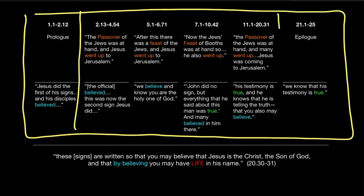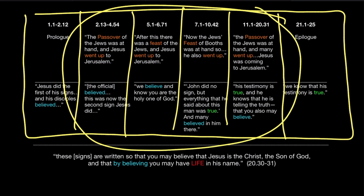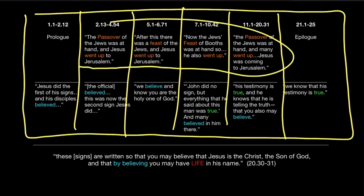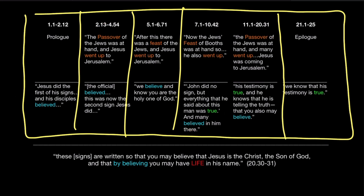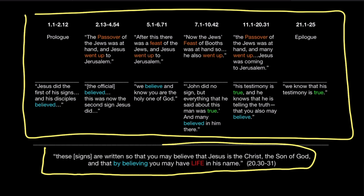There are four main sections — the body of the book — the visits that Jesus paid to the city of Jerusalem for the occasion of various festivals, traveling from Galilee to Judea and usually back. We noticed how these sections all begin and end in a pattern related clearly to the overarching purpose of the book: these signs are written so that you may believe that Jesus is the Christ, the Son of God.